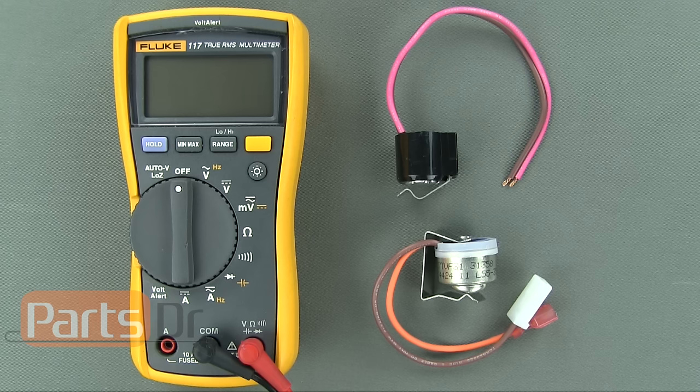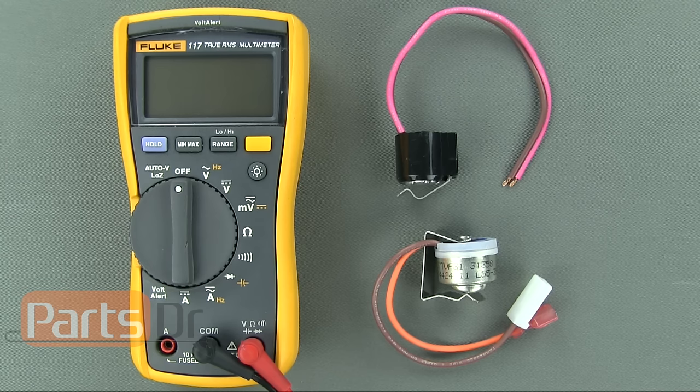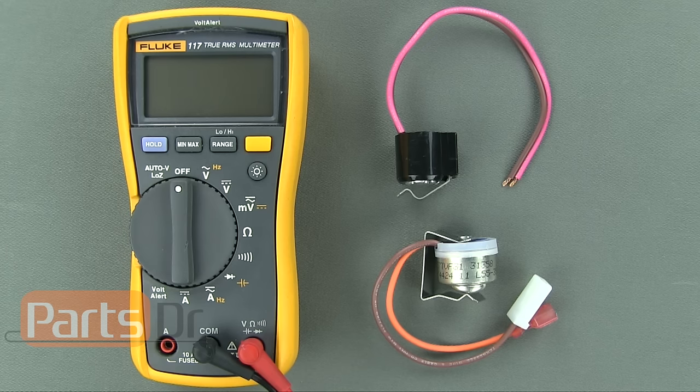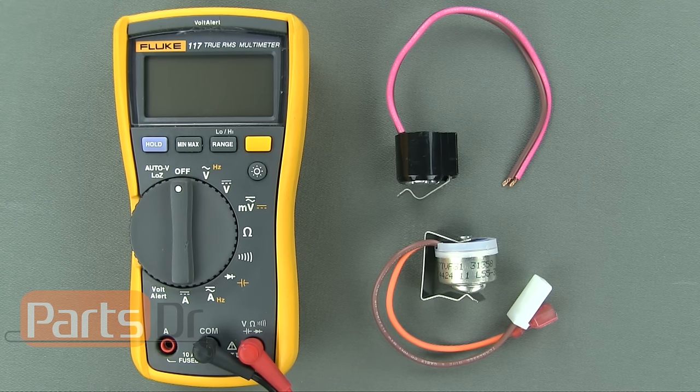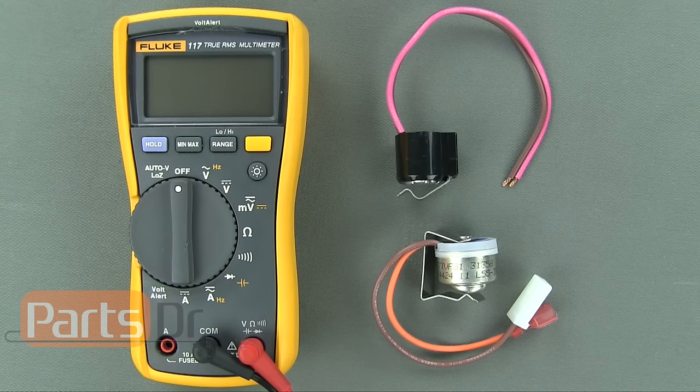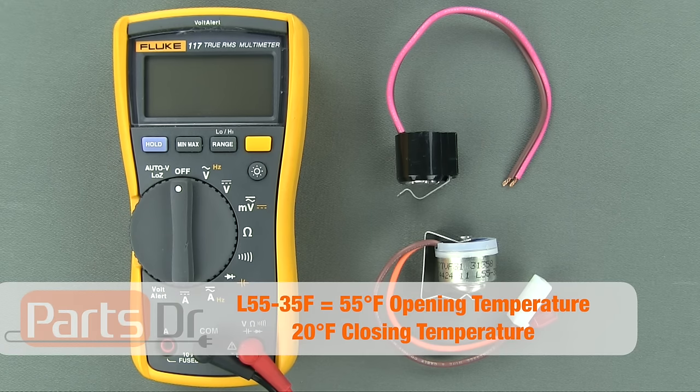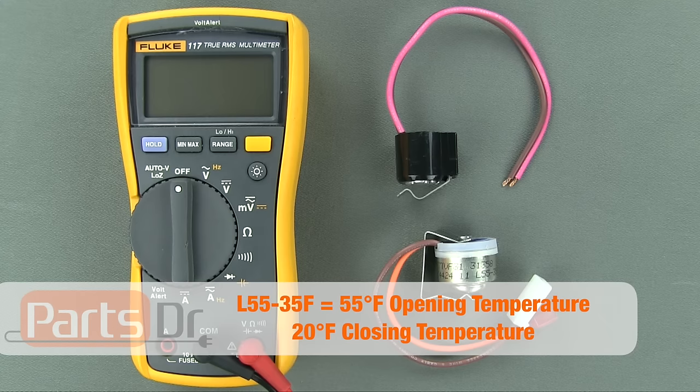The second number on the thermostat is often confused and thought of as the closing temperature. This is not correct. To get the closing temperature of the thermostat, you have to take the first number minus the second number. So in this case, we would take 55 minus 35 to get a closing temperature of 20 degrees Fahrenheit on this thermostat.